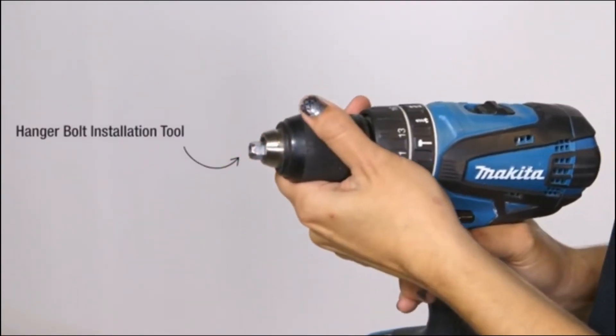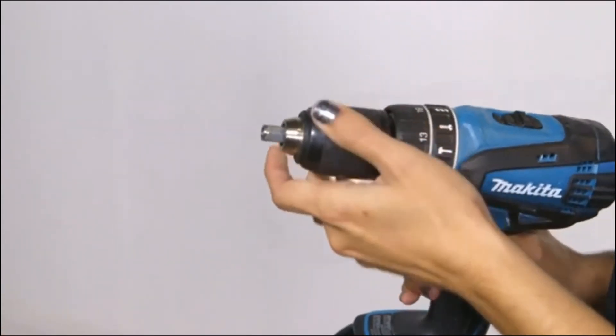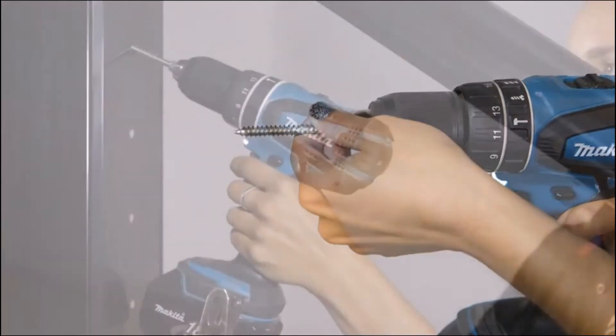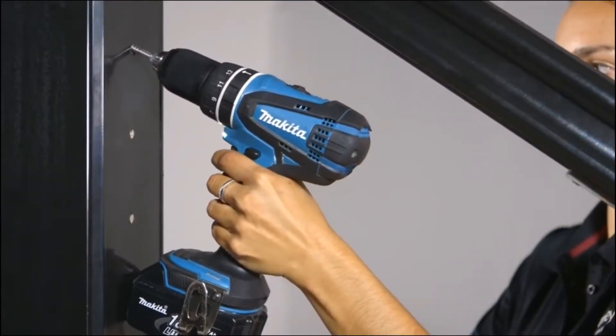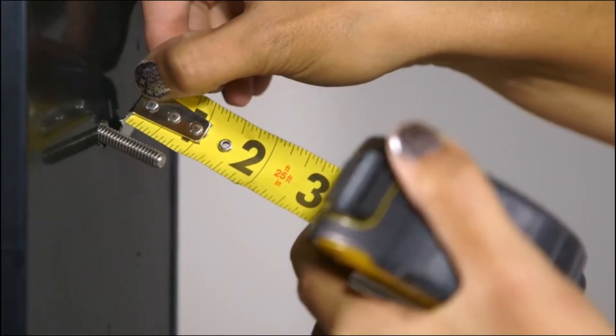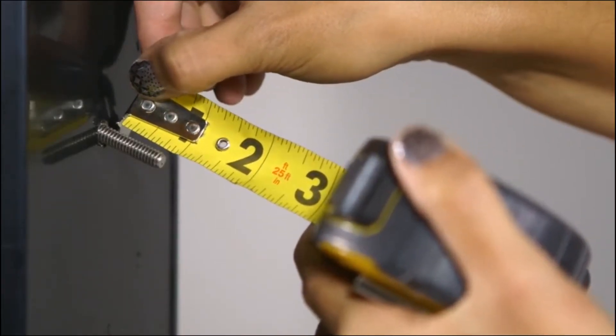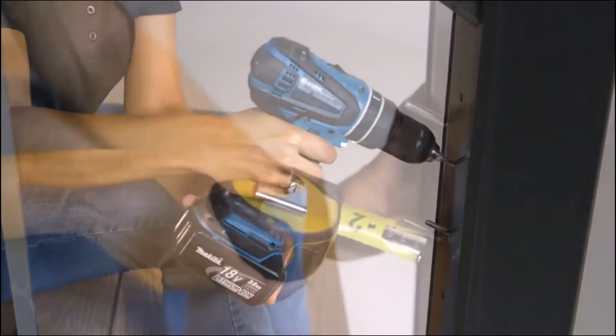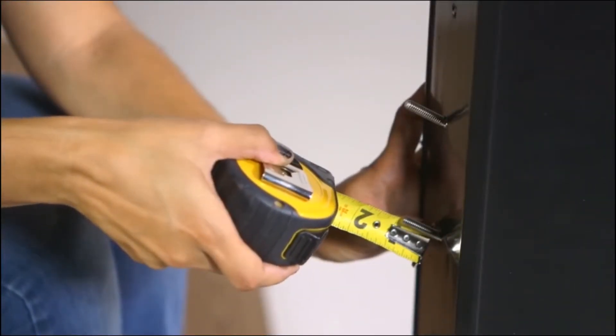On the top termination post, drive a hanger bolt into each pilot hole using a hanger bolt installation tool and either a socket wrench or electric drill. Be sure to leave one inch of thread exposed. Then install hanger bolts in the bottom termination post, also leaving one inch of thread exposed.